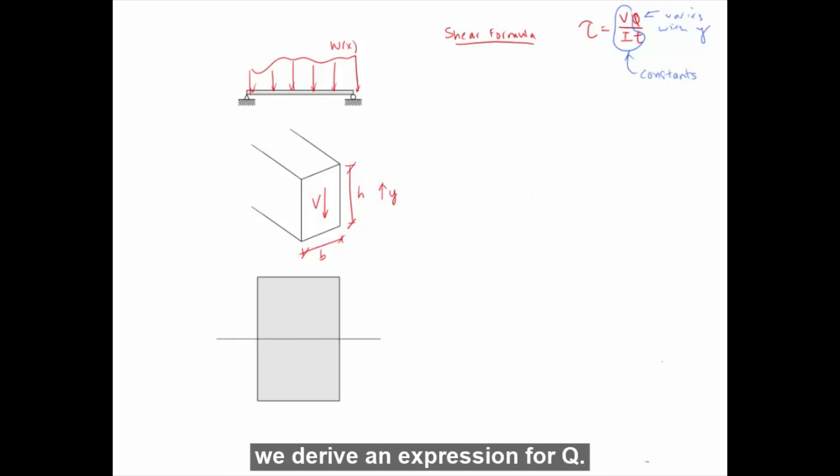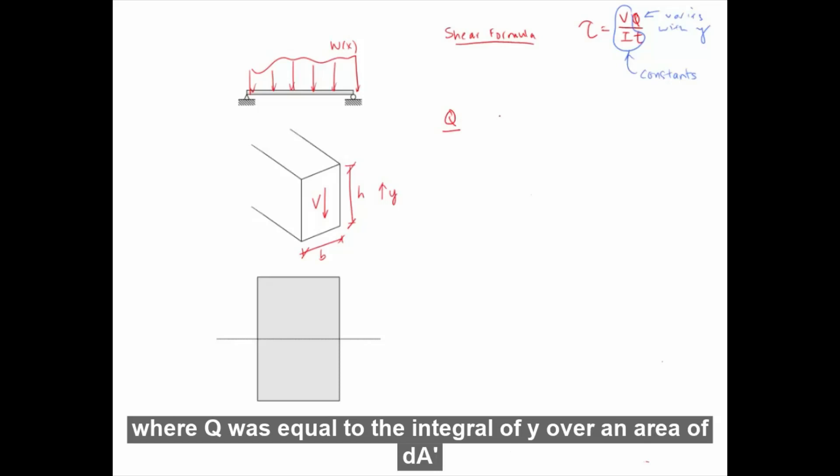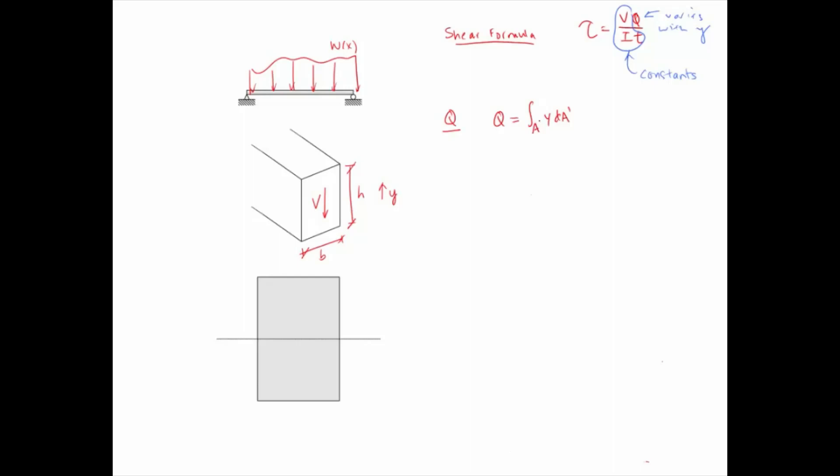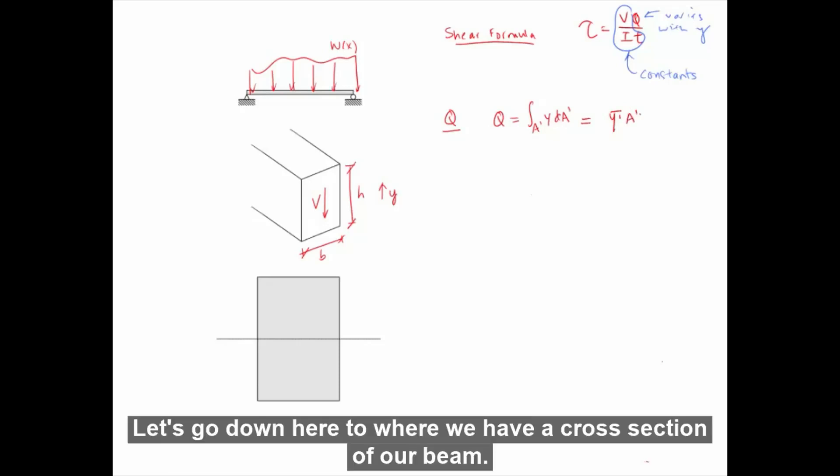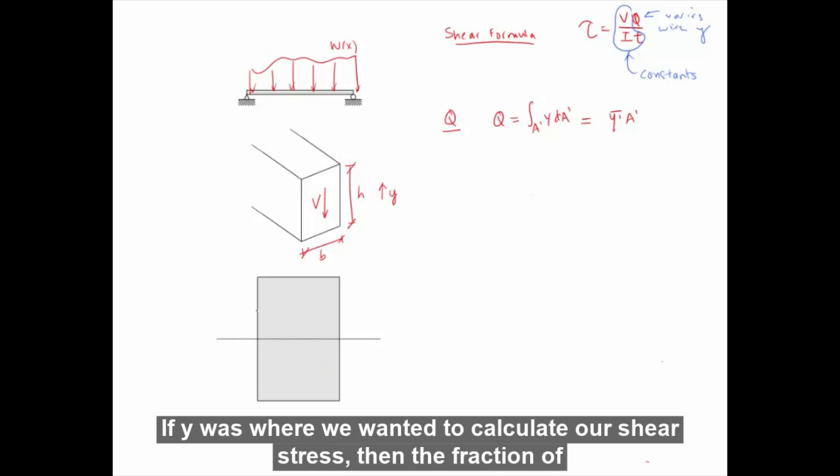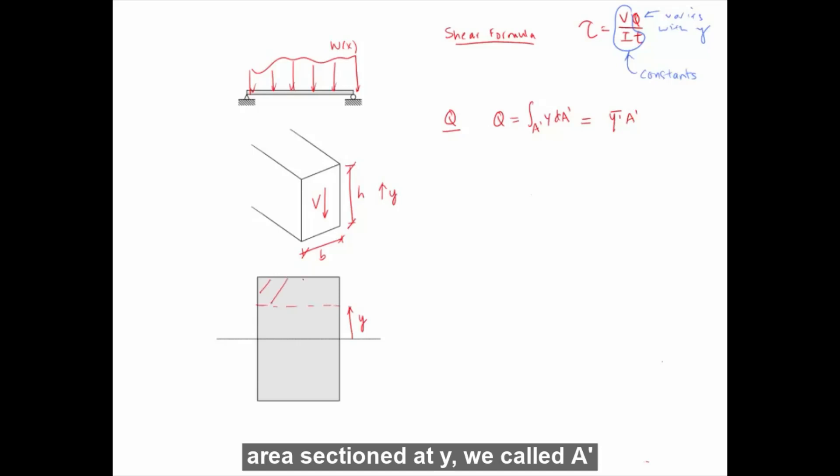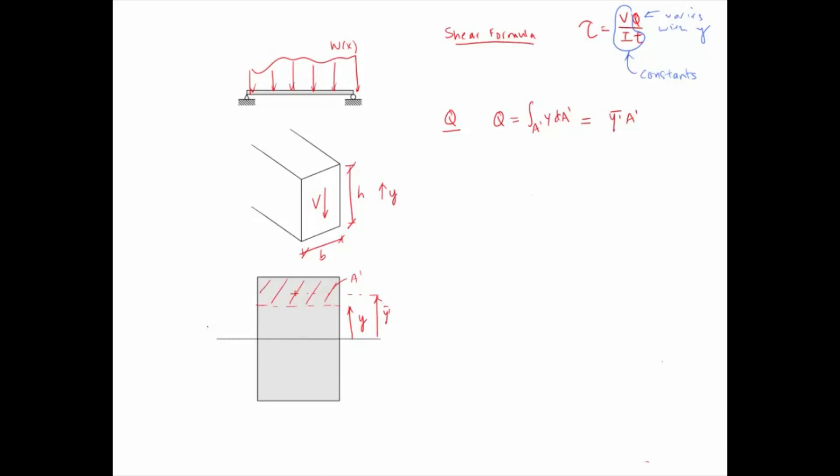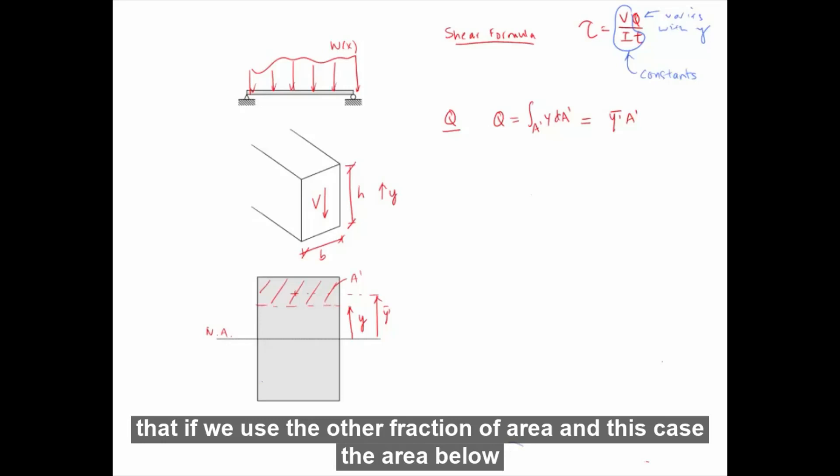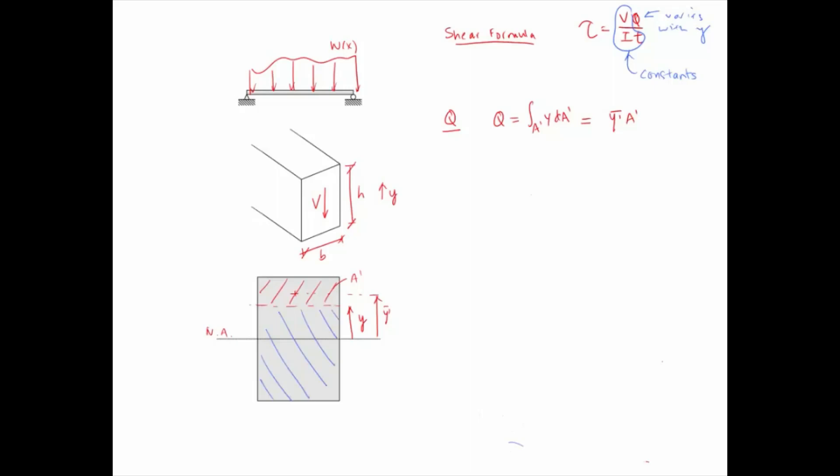Remember from the previous video, we derived an expression for Q, where Q was equal to the integral of Y over an area of dA prime, and this was simplified to some Y prime bar times A prime. Let's go down here to where we have a cross section of our beam. If Y was where we wanted to calculate our shear stress, then the fraction of area sectioned at Y we call it A prime. We can then let Y prime bar be the distance from the centroid of the sectioned area to the neutral axis of the section. And Q is just the product of these two values. We want to quickly note that if we use the other fraction of area, in this case the area below the cut of Y, and the corresponding Y prime bar at the centroid of this area A prime, this should yield the same value for Q.